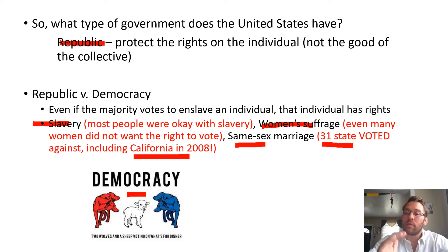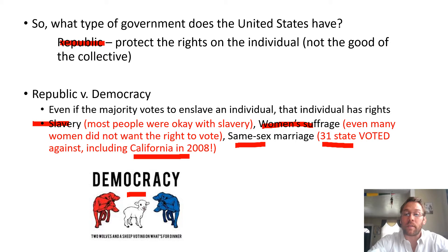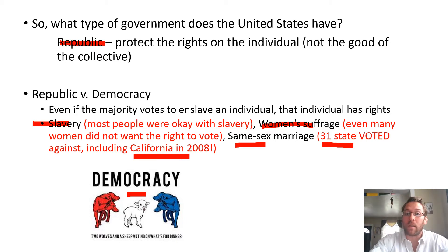That's the difference between a republic and a democracy. You live in a republic — you want to live in a republic. If you live in a democracy, the majority can take away your rights, because then you have majority rules, and you do not want majority to rule.